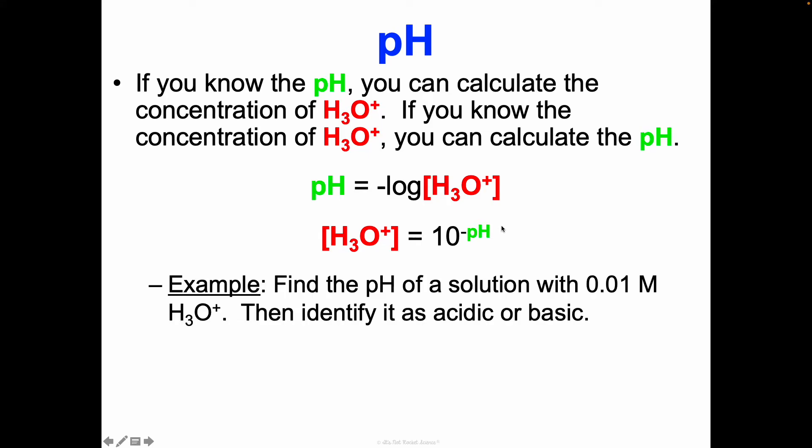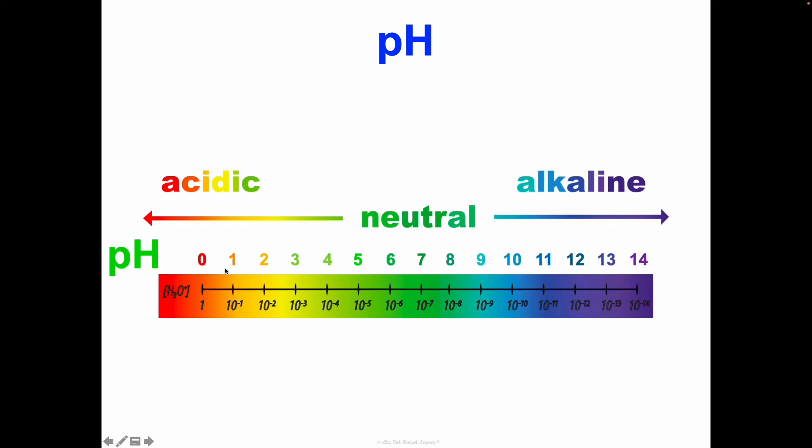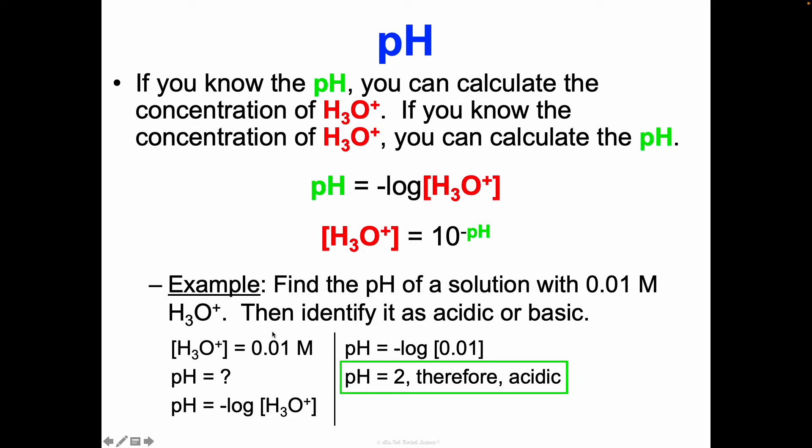For example, find the pH of a solution with a 0.01 molar hydronium ion concentration, then identify it as acidic or basic. My concentration is 0.01 molar. What's the pH? If I'm looking for pH, I need this negative log equation. I can plug in negative log of 0.01. When you put that in your calculator, you should get 2. A pH of 2, if we go back to our scale, is acidic.